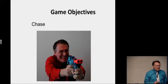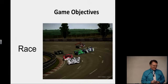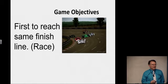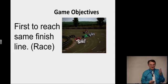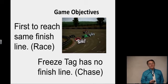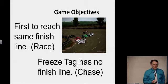Chase game: laser tag is a good example, where you're pursuing your opponent. A race game is different — in a race game, the first to reach the same finish line wins; everybody is headed for the same objective. Freeze tag has no finish line — it's a chase game, and laser tag is a technological version of freeze tag. You're chasing each other around, pursuing wherever the quarry goes, not necessarily toward a finish line.